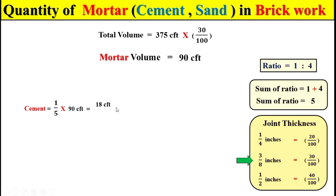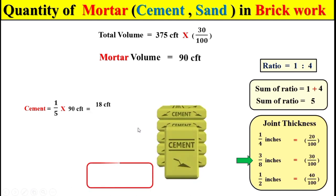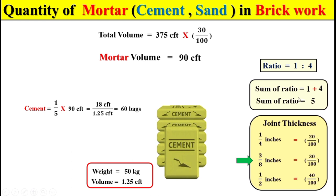To convert this total cement volume into number of bags, remember that one bag of cement weighs 50 kg and has a volume of 1.25 cubic feet. So we divide the total cement volume of 18 cubic feet by 1.25 cubic feet to get the total number of bags required for this mortar.